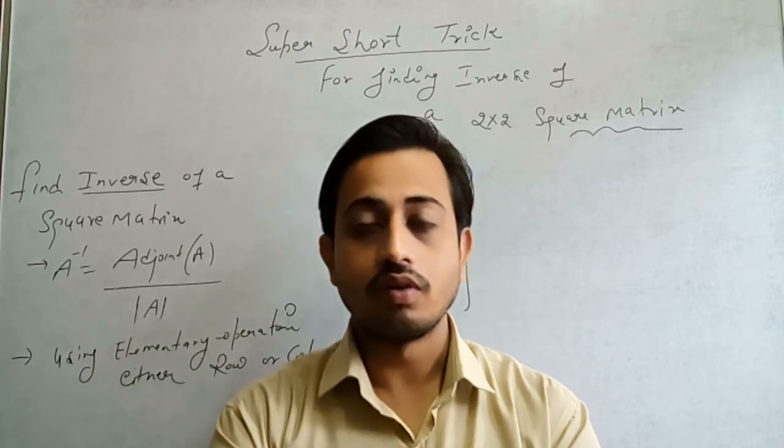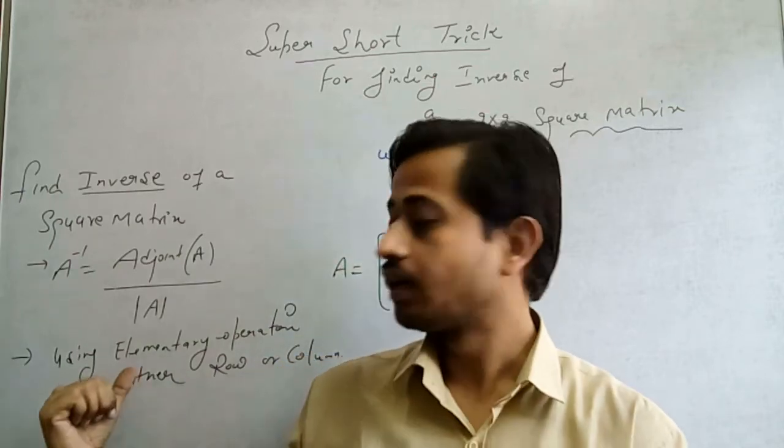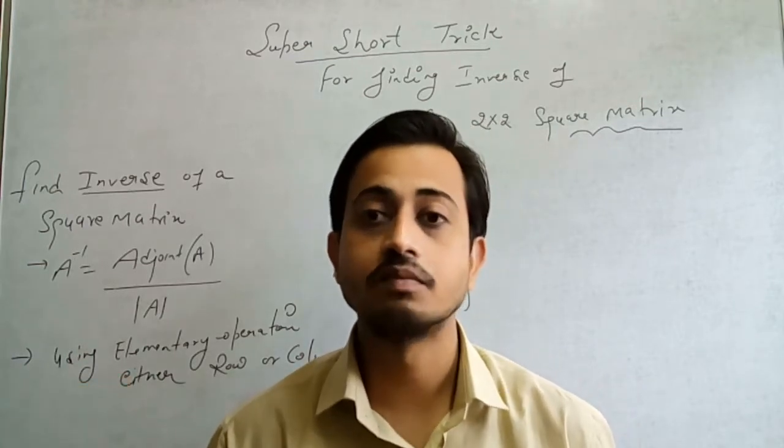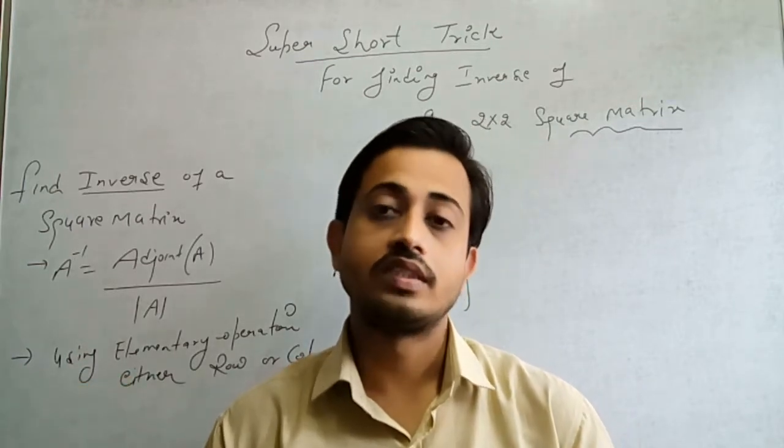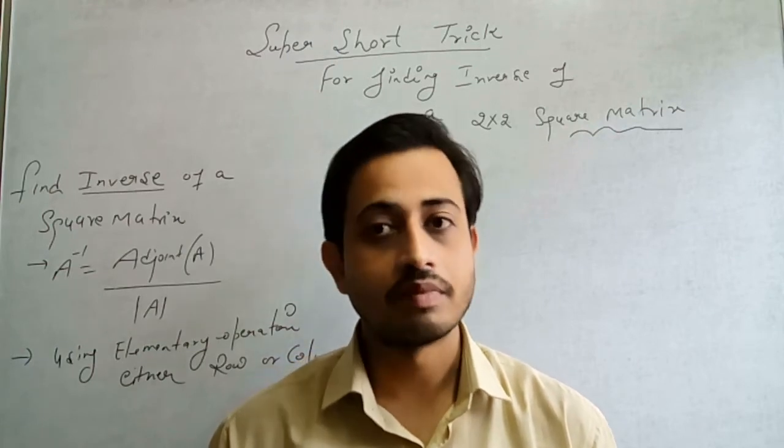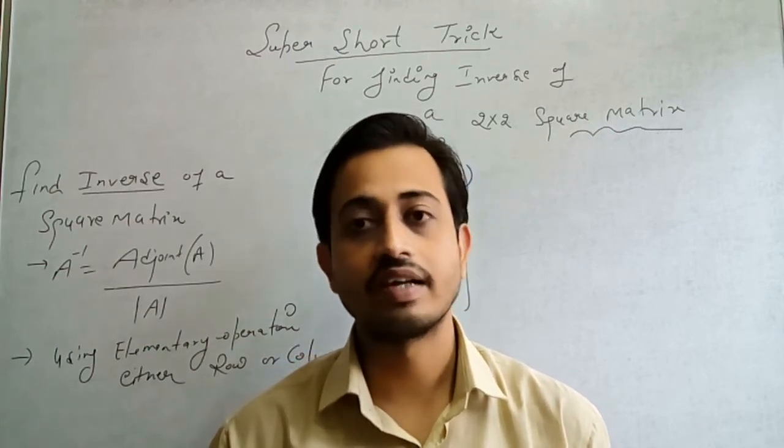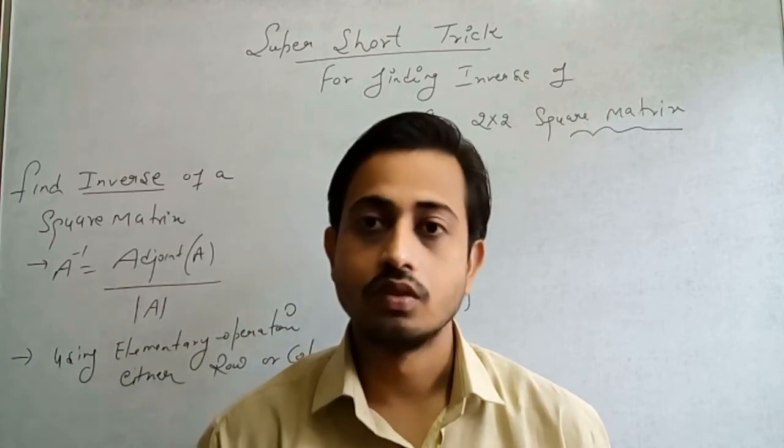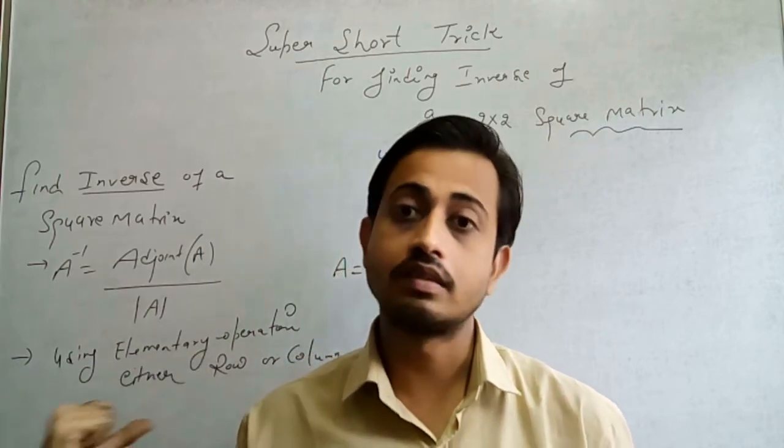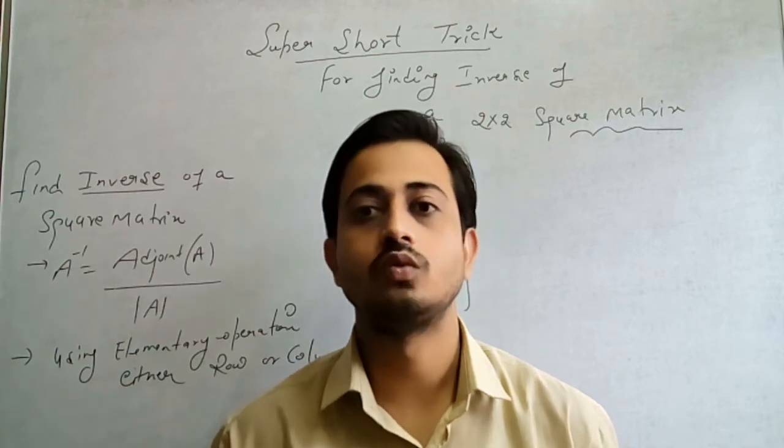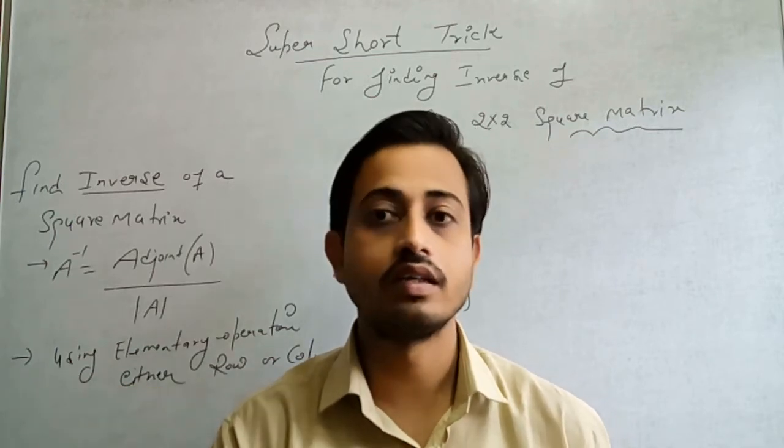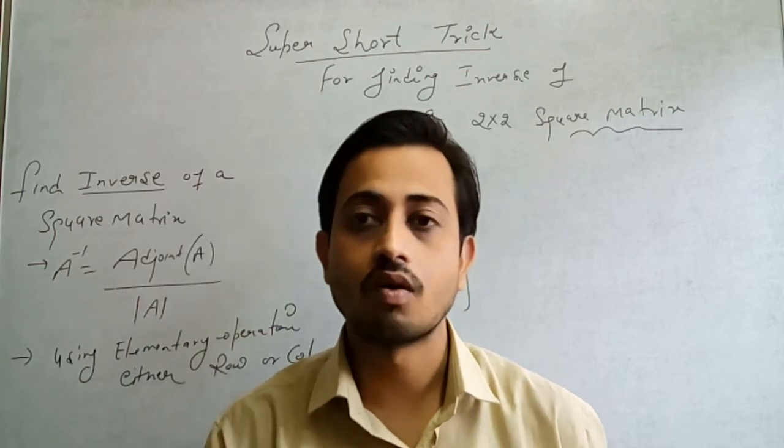Another method we already know is called elementary operations. Elementary operations means we have to do some operations, either we can apply it on rows or we can apply it in columns. This method is very lengthy and complex. Every student wants to skip such a method if you calculate only the inverse but the method is not mentioned.